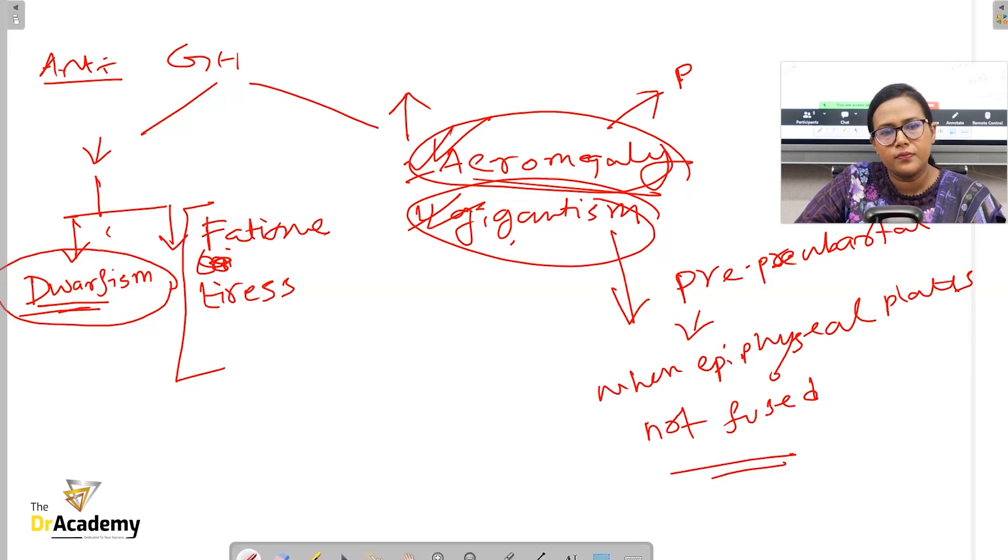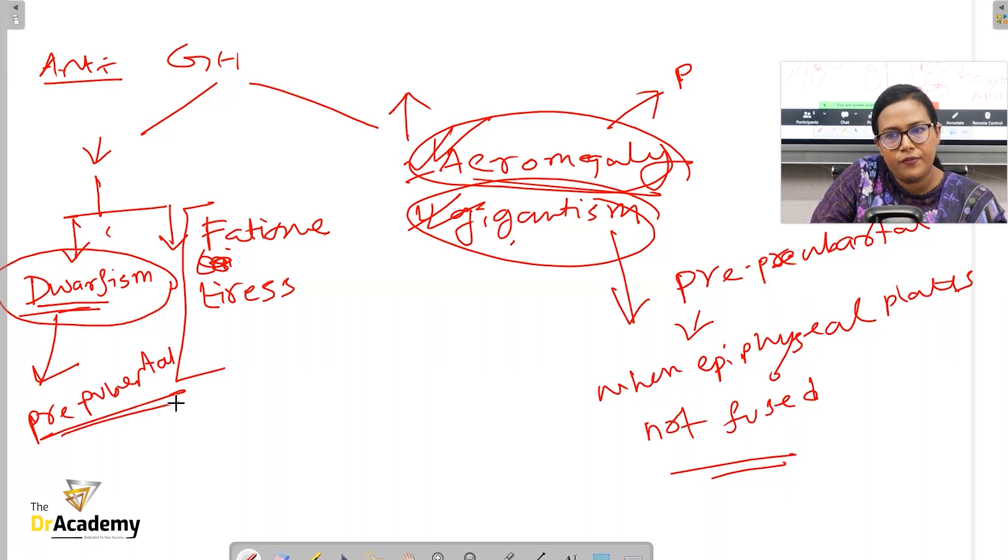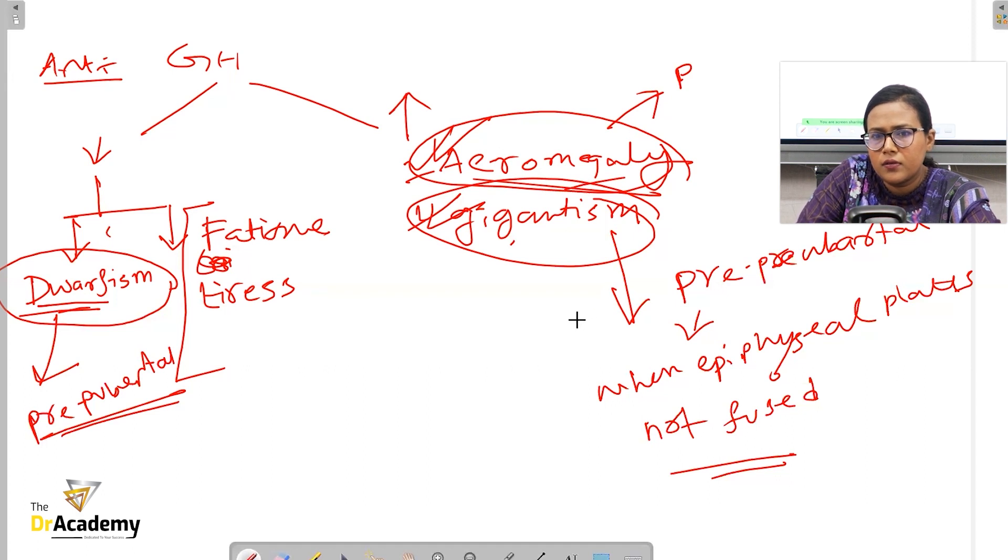Next is prolactin. If there is excessive secretion of prolactin, this leads to a condition known as prolactinoma. The commonest features are gynecomastia, and lactation or galactorrhea. In males, there might be whitish discharge coming from the nipple as well. Tiredness is a very important finding.